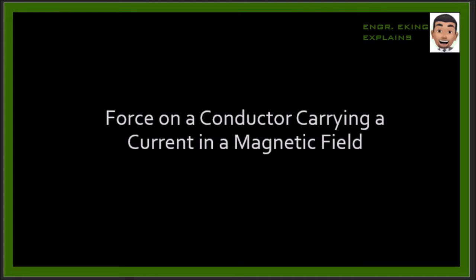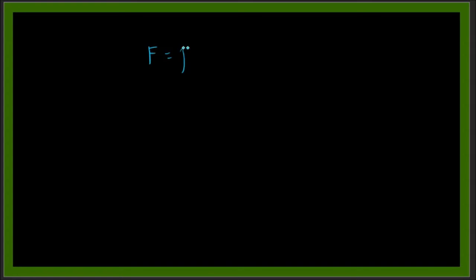In this video we'll be talking about force on a conductor carrying a current in a magnetic field. For that we have the formula: F equals beta times I times L.